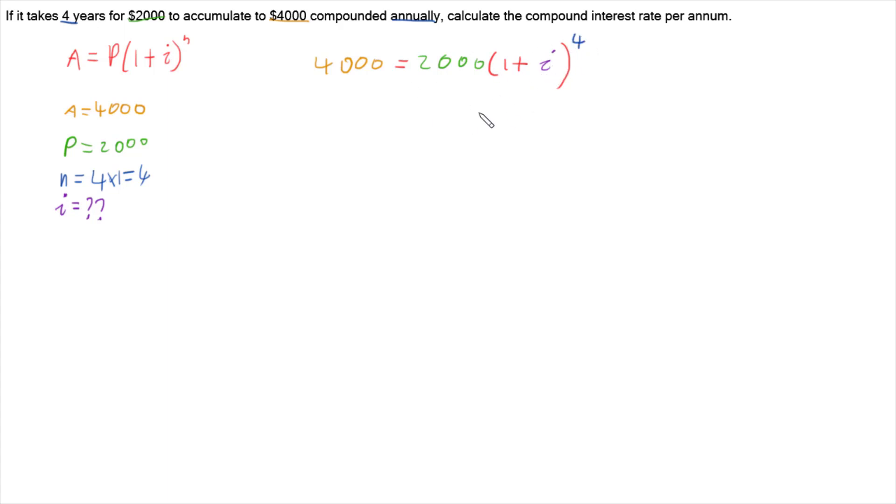So now we want to algebraically solve this question to work out what i is. So let's divide both sides by 2,000. So I'm going to have 4,000 divide by 2,000 on the left, and that's going to be 1 plus little i to the power of 4. And 4,000 divided by 2,000 is 2. So I've got 2 equals 1 plus little i to the power of 4.